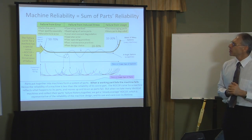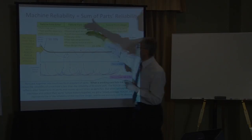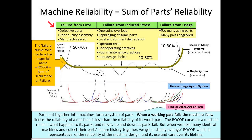We know why machines fail — things like defective parts, poor assembly, manufacturing errors, operating overload, ageing of parts that are not replaced, and local environment degradation. For example, if our lubricant gets water in it, the local environment degrades; if it gets wear particles or dust and dirt, the oil is degraded. And of course, eventually things do age.